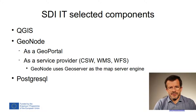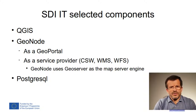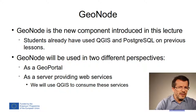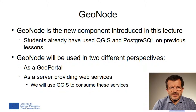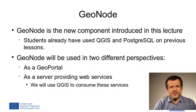In practice, for this course and in this lecture, we'll use these tools: QGIS, GeoNode and Postgres. At this course level, students should already be familiar with QGIS and Postgres. GeoNode is a new component introduced in this lecture. GeoNode will be used in two different perspectives: as a GeoPortal and as a server providing web services. We'll use QGIS to consume the services provided by GeoNode.